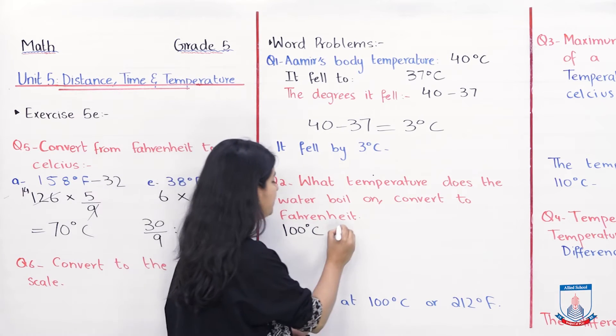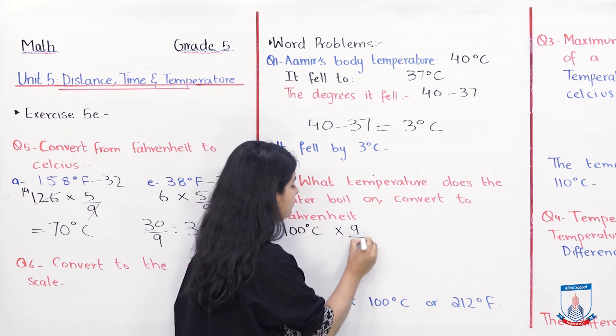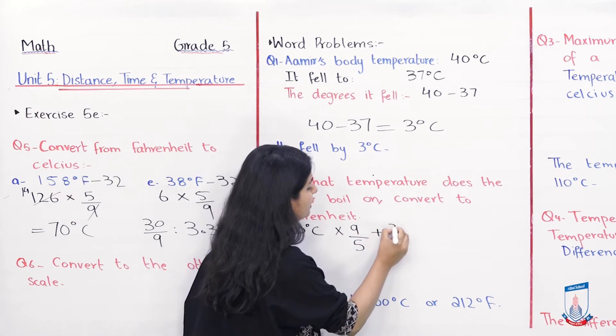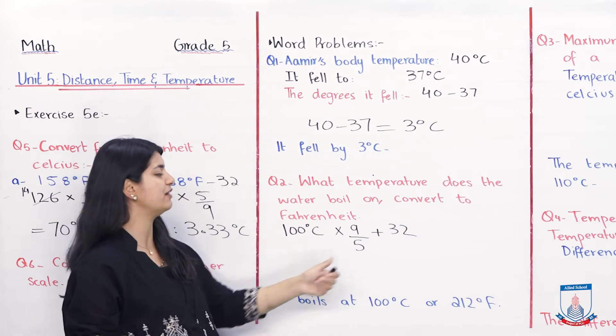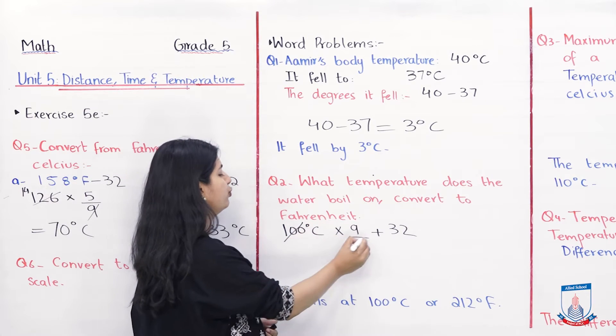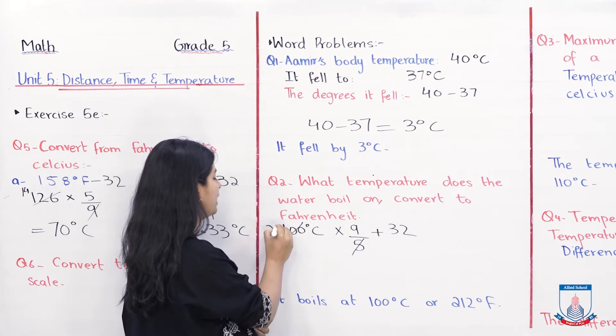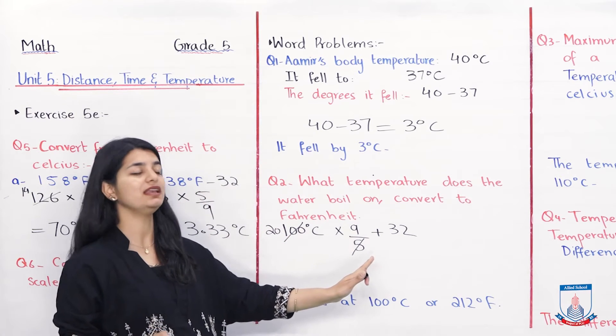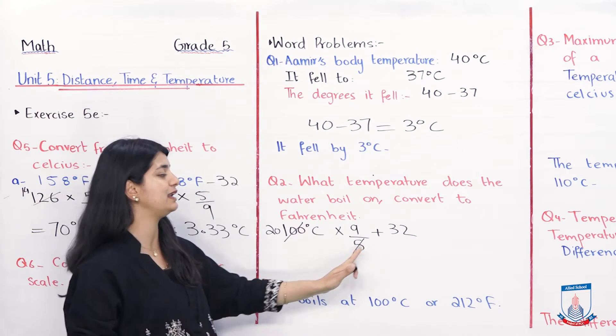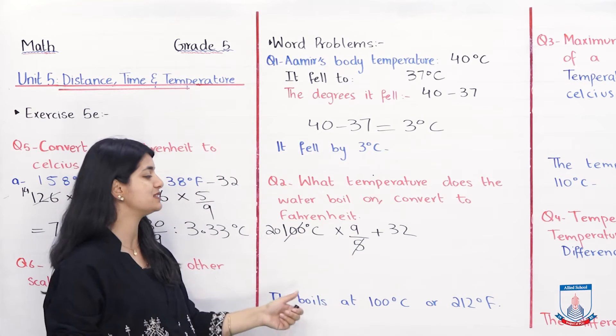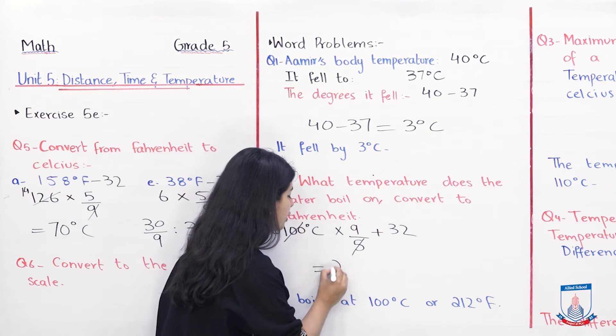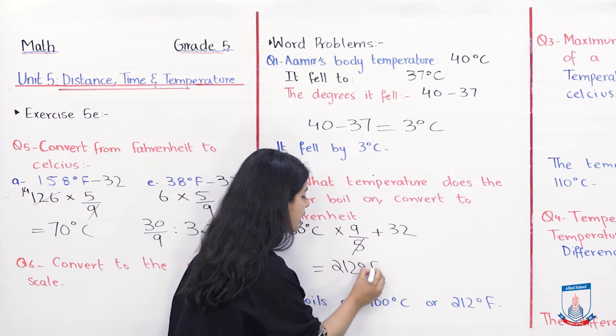So we will convert it to Fahrenheit by multiplying it with 9 over 5 and adding 32. 9 and 100 and 5 can be cancelled out. We divide both by 5 and get 20. What is 20 into 9? 20 into 9 is 180. Plus 32 would be 212.